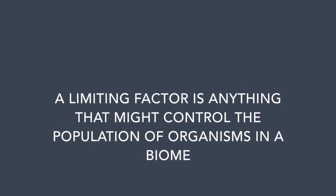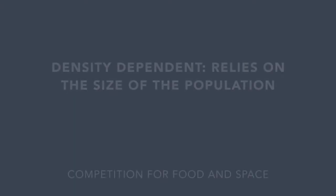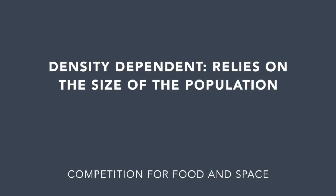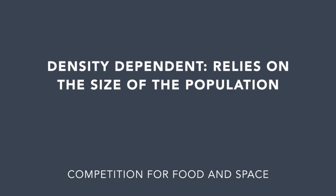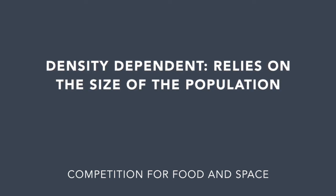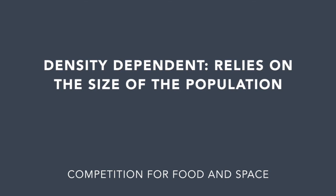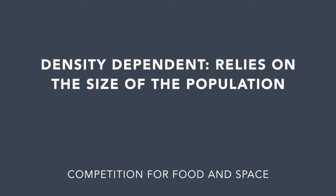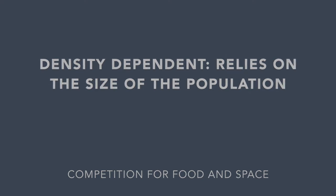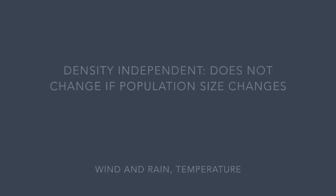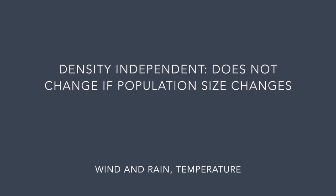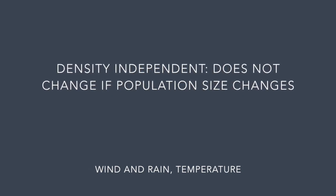Limiting factors are mechanisms that can affect a biome. There is density dependent, which relies on the population of organisms in the biome, and independent, which is constant. The most common dependent factors are competition for food and space, both of which can become scarcer depending on how large the population is. Temperature and weather are always independent factors — the temperature is a constant low and the strong winds are ever-present.